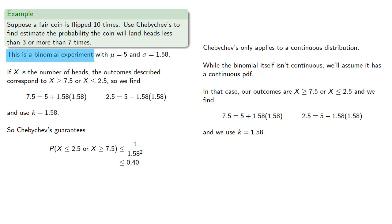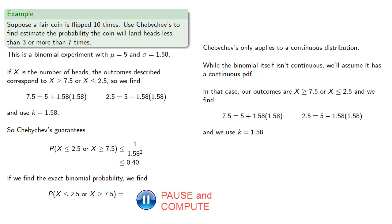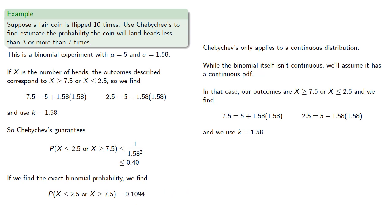Since this is a binomial probability, we can find the exact binomial probability, which is 0.1094. So Chebyshev's is a rather generous overestimate of what the probability will be.